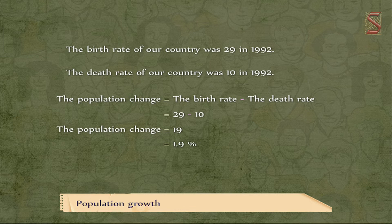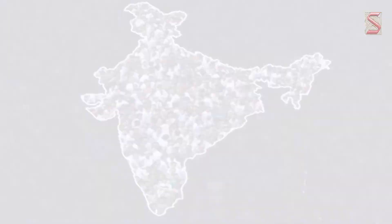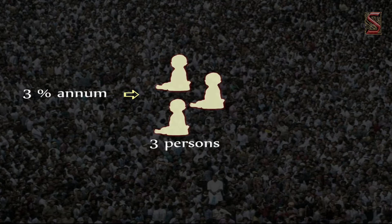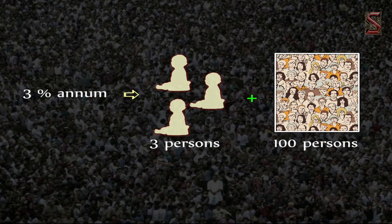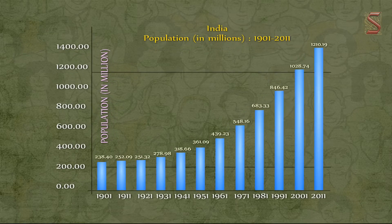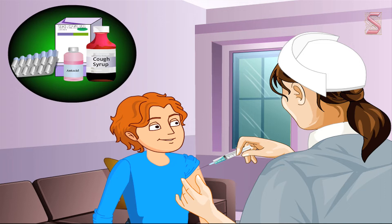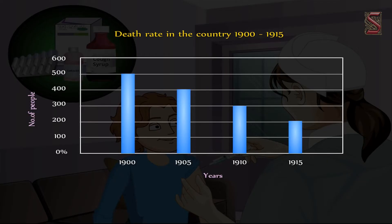The rate of population increase is given as percent per annum or annual growth rate. For example, three percent per annum means an increase of three persons for every hundred in that year. Looking at India's population graph from 1901 to 2011, there is a sharp decline in death rates due to developments in medicines like vaccines and antibiotics, which led to improvements in healthcare.